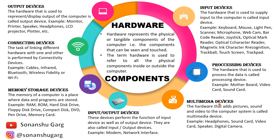Next, Multimedia Devices. The hardware that adds pictures, sound, and video to the computer system is called a Multimedia Device — hardware which helps us use pictures, sound, or any kind of video on a computer. Examples include: headphones, sound card, video card, speaker, digital camera, etc. Note that one device can belong to multiple categories — for example, headphones are also an output device.